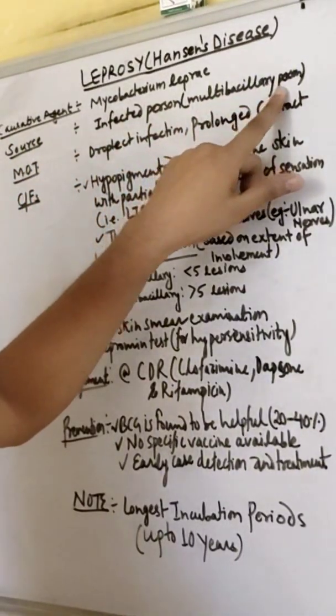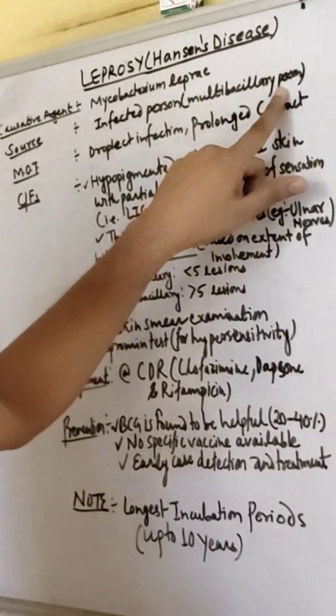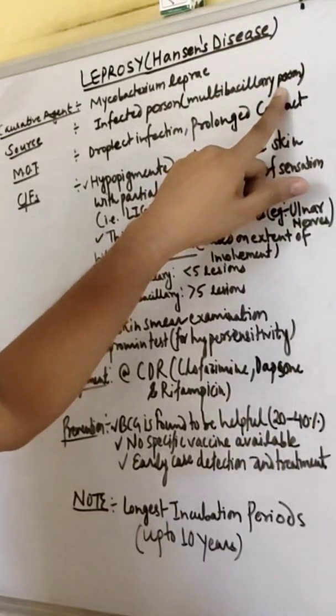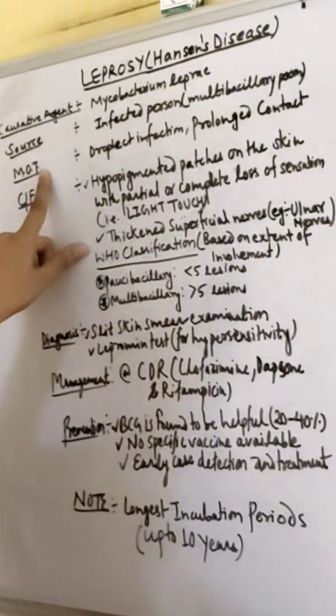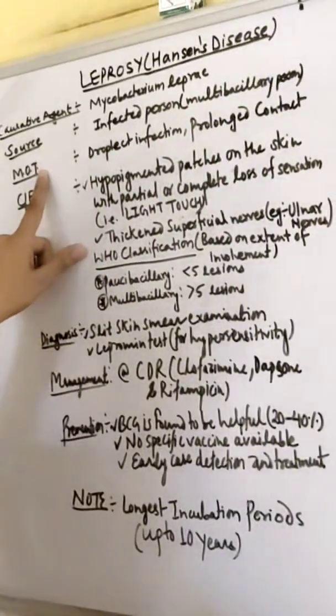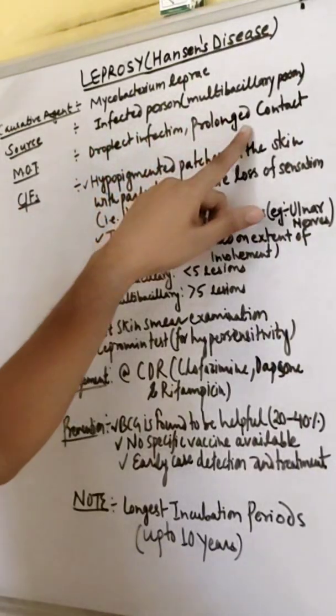Those who are infected means those who are suffering from or caused by Mycobacterium leprae. The mode of transmission is droplet infection and prolonged contact.